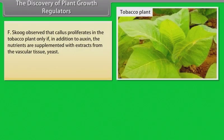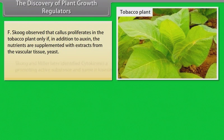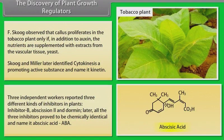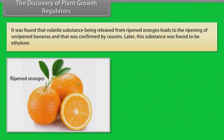F. Skoog observed that callus proliferates in the tobacco plant only if, in addition to auxin, the nutrients are supplemented with extracts from the vascular tissue or yeast. F. Skoog and Miller later identified a cell-division-promoting active substance and named it kinetin. Three independent workers reported three different kinds of inhibitors in plants — inhibitor B, abscission-2 and dormin. Later, all three inhibitors proved to be chemically identical and were named abscisic acid (ABA). It was found that a volatile substance being released from ripened oranges leads to the ripening of unripened bananas, and that was confirmed by Cousins. Later, this substance was found to be ethylene.